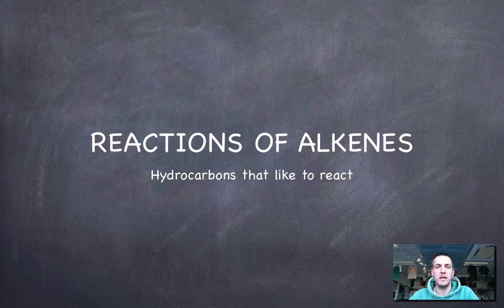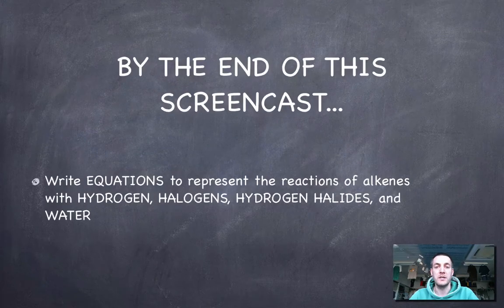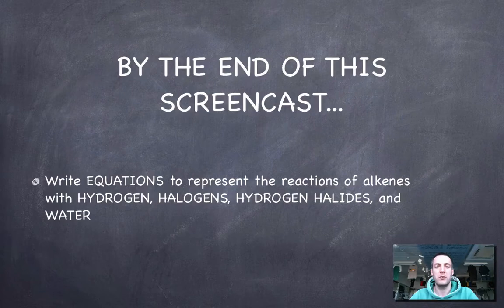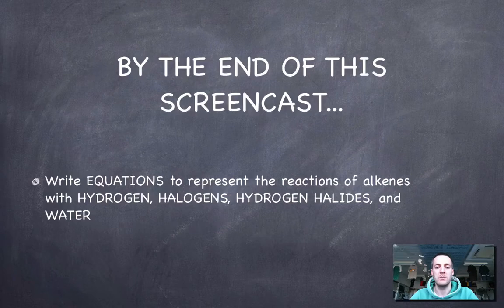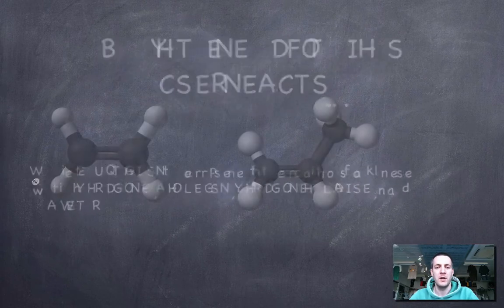Having looked at the reactions of alkanes, we're now going to look at the alkenes. These are actually a little bit simpler than the alkanes, and we're going to write equations to represent the reactions of alkenes with four different things. They are hydrogen, halogens, hydrogen halides, and water. No mechanisms here, you'll be pleased to hear.